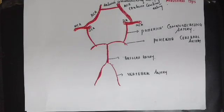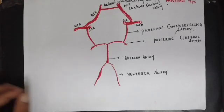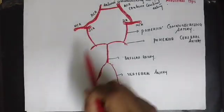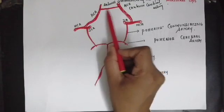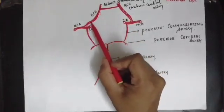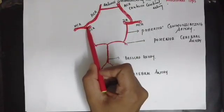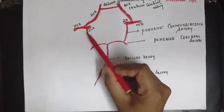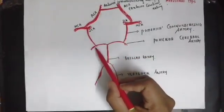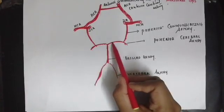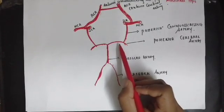Now we can see that an arterial circle is formed. The anterior part of the circle is formed by the anterior communicating artery. The anterolateral part is formed by the anterior cerebral artery. The lateral part is formed by the internal carotid artery, and the posterolateral part is formed by the two posterior communicating arteries.